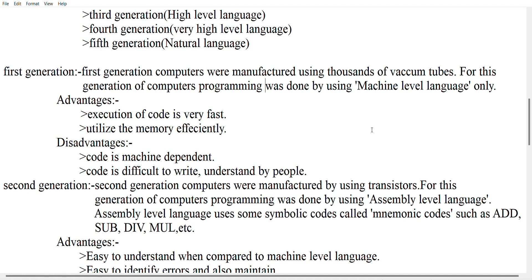The advantages of first generation computers are that execution of code is very fast, and memory is utilized efficiently. The disadvantages are that code is machine-dependent and difficult to write or understand. Error detection is also very hard. Due to vacuum tube technology, computers occupied more space and were too expensive.